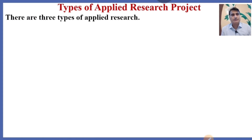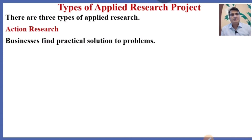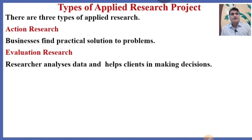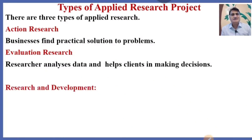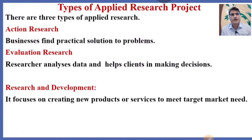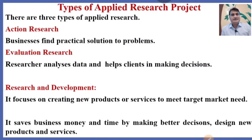The applied research project can be further subdivided into three categories. First, action research, in which businesses find practical solutions to problems. Second, evaluation research, under which researchers analyze data and help clients in making decisions. Third, research and development, which focuses on creating new products and services to meet target market needs. Research basically saves business money and time by enabling better decisions and the design of new products and services.